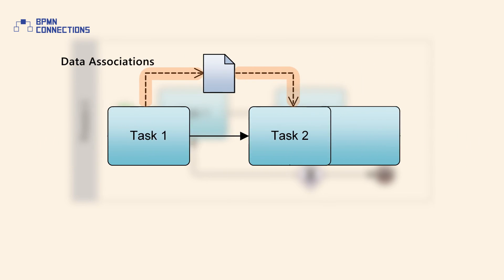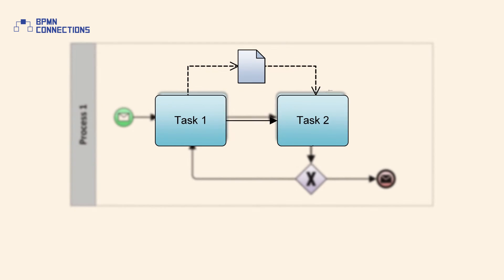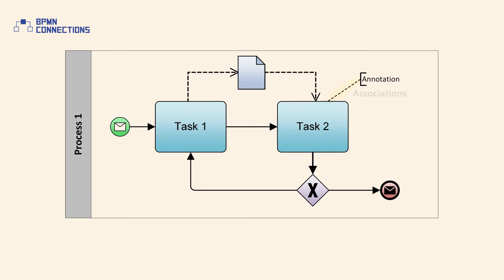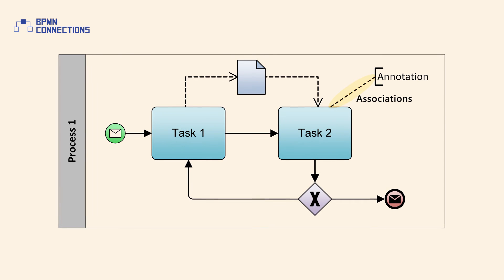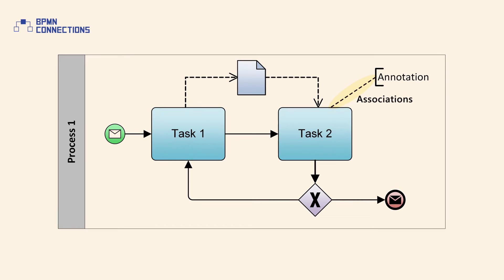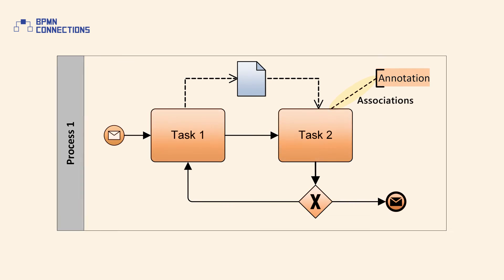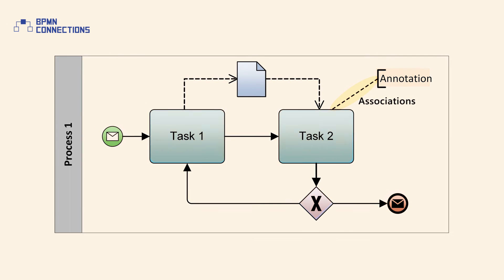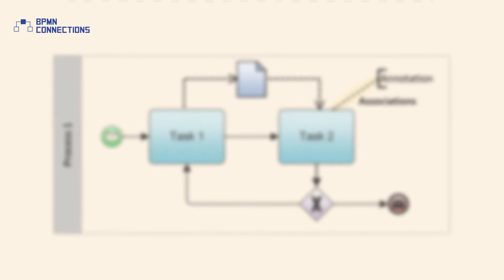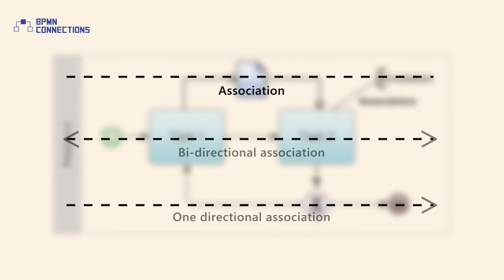The last type of connecting object is association, which has the same graphical representation as data association. Associations are used to link BPMN artifacts with other BPMN elements and are most commonly used to connect text annotation with activity, gateway, or event. If there's a reason to put directionality on the association, then a line arrowhead may be added to the association line.